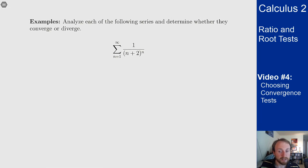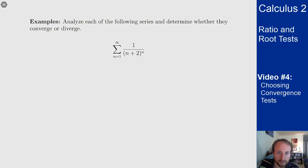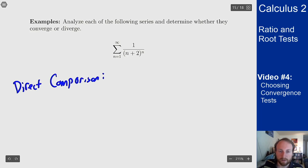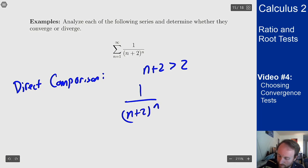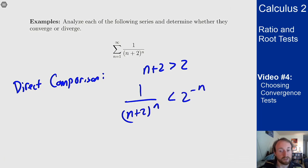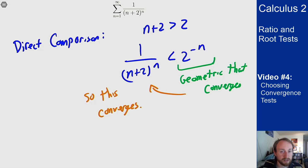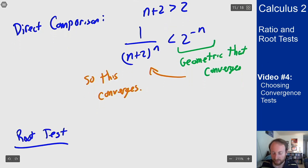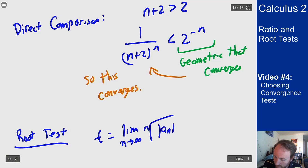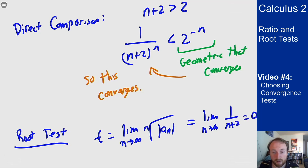Now let's go through four examples. First: the sum from 1 to infinity of 1/(n+2)^n. One approach is direct comparison: since n+2 > 2, we have 1/(n+2)^n < 1/2^n = 2^{-n}, a convergent geometric series, so the original converges. Another option is the root test, since we see nth powers: the nth root of a_n is 1/(n+2), and the limit as n→∞ is 0, which is less than 1, so the series converges.